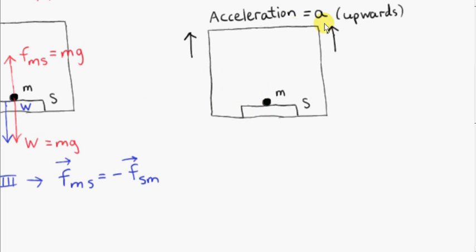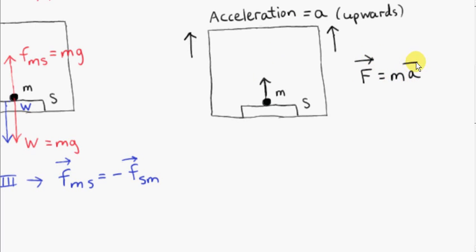Now let's consider the case of the elevator accelerating upwards with acceleration of magnitude A. The elevator is moving upwards and speeding up as it does so. Since the particle is at rest relative to the elevator, the particle must have acceleration A. The resultant force on the particle must be in the same direction as the acceleration — we're applying Newton's second law, F equals MA.